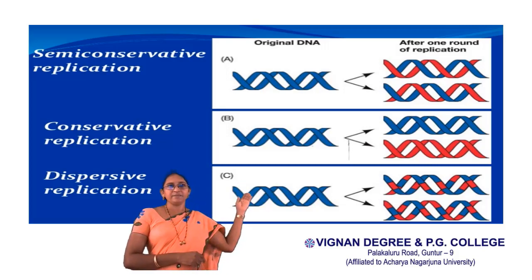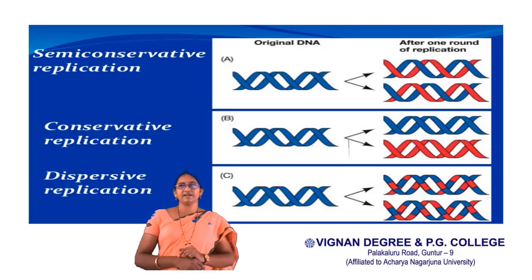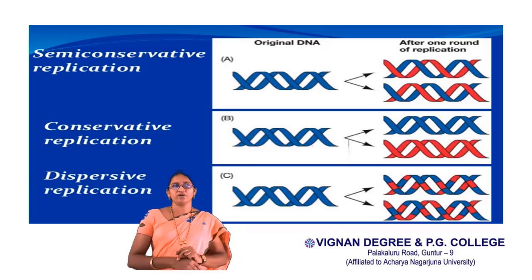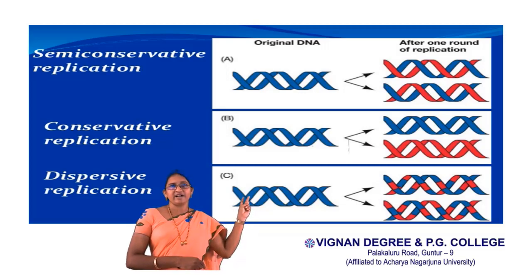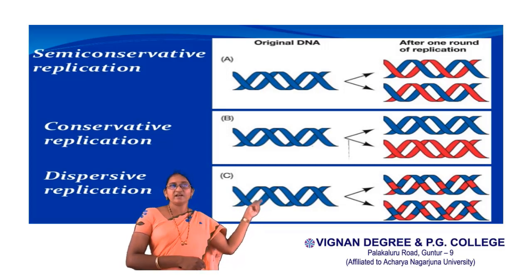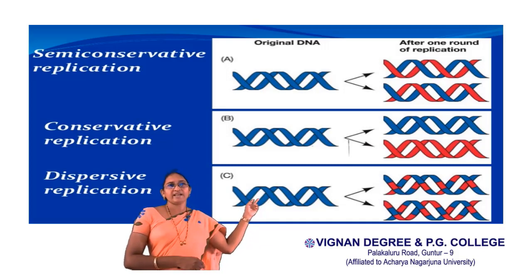Coming to the third type — dispersive replication. It results in the formation of two DNA molecules where each individual strand is made up of a mixture of original and daughter strand segments. This patchwork pattern of replication is known as dispersive replication.